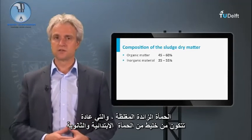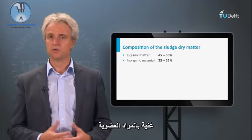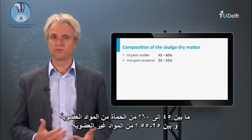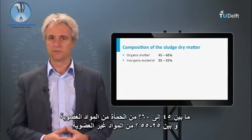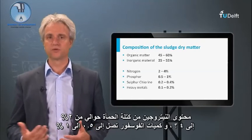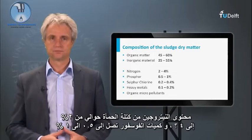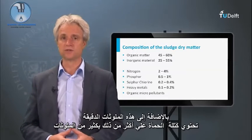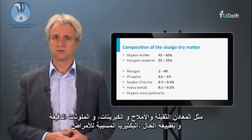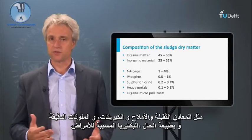The thickened excess sludge, which generally consists of a mixture of primary and secondary sludge, is rich in organic matter. Between 45 to 60 percent of the sludge is organic matter, and between 25 to 55 percent of the material is inorganic. The nitrogen content of the sludge mass is about 2 to 4 percent, and phosphorous amounts to 0.5 to 1 percent. In addition to these, the sludge mass contains more contaminants, such as heavy metals, salts, sulfates, micropollutants, and pathogenic bacteria.